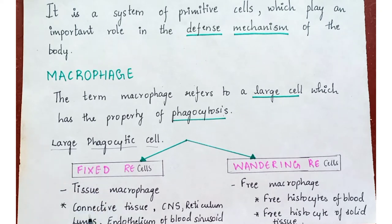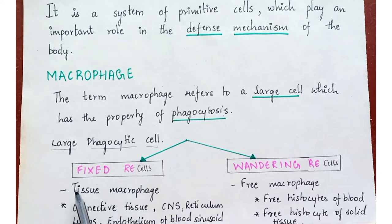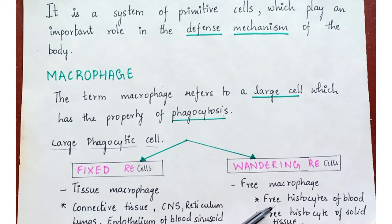Fixed reticulo-endothelial cells are present in connective tissue, CNS, reticulum, lungs, and endothelium of blood sinusoids. Wandering cells are free histiocytes of the blood and free histiocytes of the solid tissue — they are wandering and free.